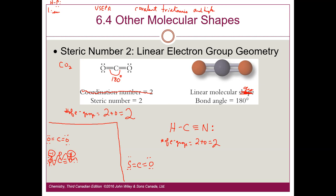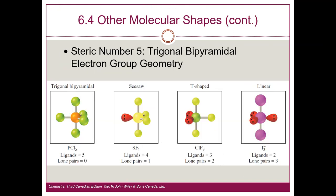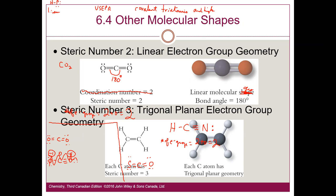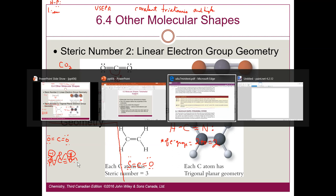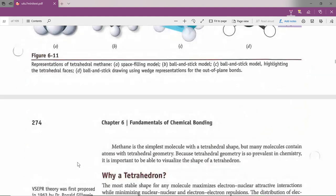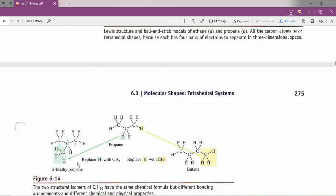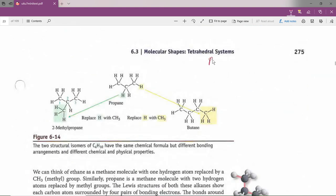Now trigonal planar electron group geometry — steric number 3. Looking at ethylene (ethene): each carbon has one, two, three bond groups and no lone pairs. The double bond counts as one group. So the angles are roughly 120 degrees for each carbon. We say three bond groups and no lone pairs — the EGG for each carbon is trigonal planar. Some books say triangular planar, but most say trigonal planar.